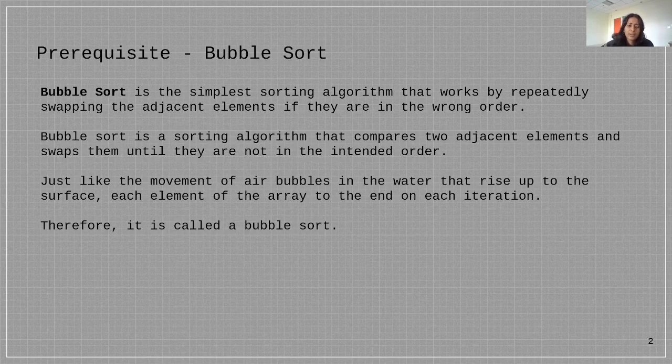Just like the movement of air bubbles in the water that rise up to the surface, each element of the array moves to the end on each iteration. Therefore it is called a bubble sort.